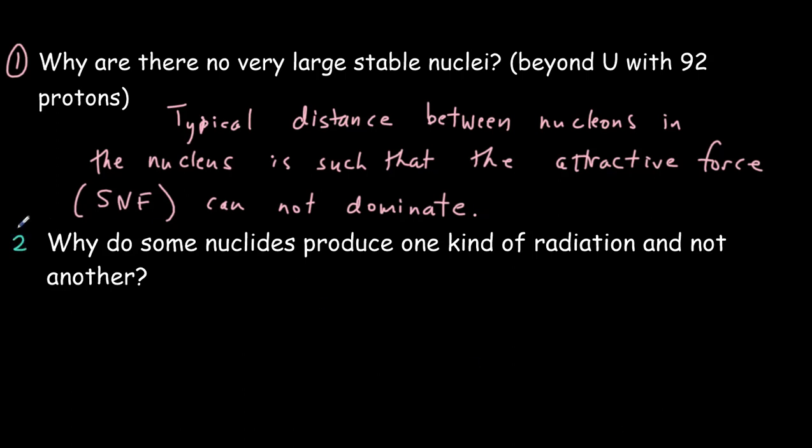And the second question, why do some nuclides produce one kind of radiation, such as beta decay or positron decay or alpha decay, and not another? What's kind of the determining factor there? And so let's look at that question in more detail.